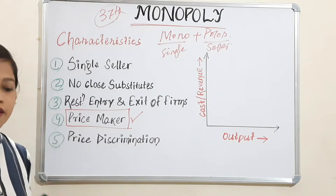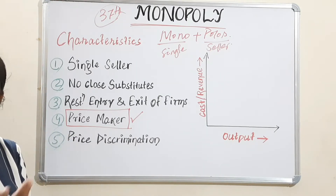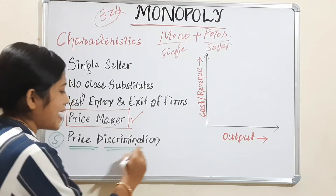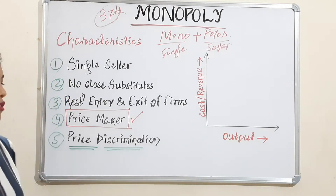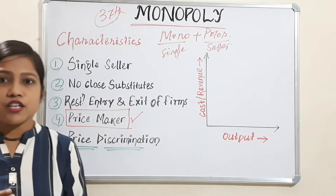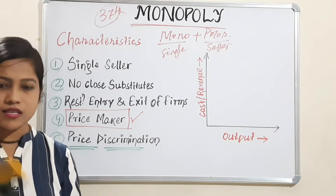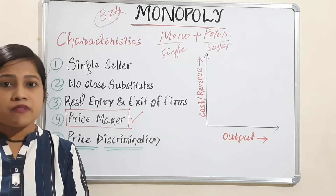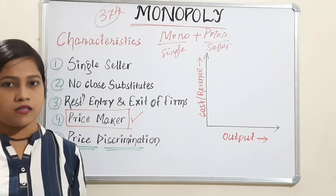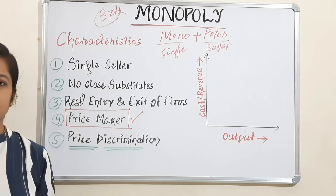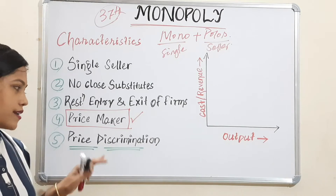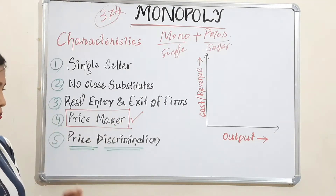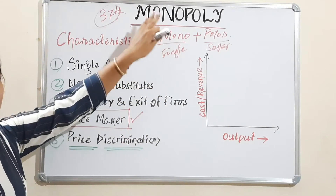The last and very important characteristic — this is the sort of question that appears in semester exams and competitive exams — is price discrimination, which happens in monopoly market. Discrimination means partiality. For example, the same product — say, dust — I will sell to person A for 20 rupees and to person B for 40 rupees. That means I am discriminating the price between consumers. This only happens in monopoly market. So price discrimination is a very important feature of monopoly market.